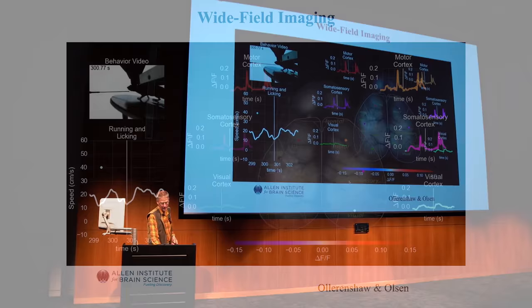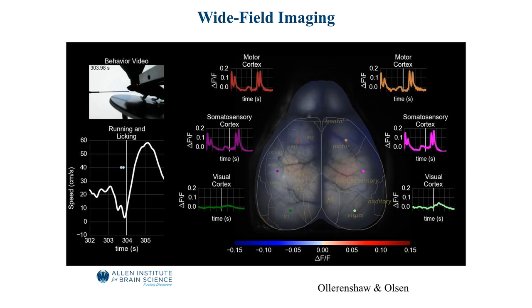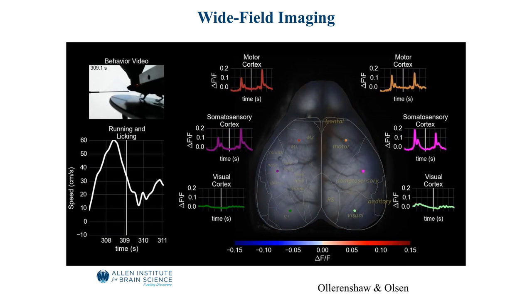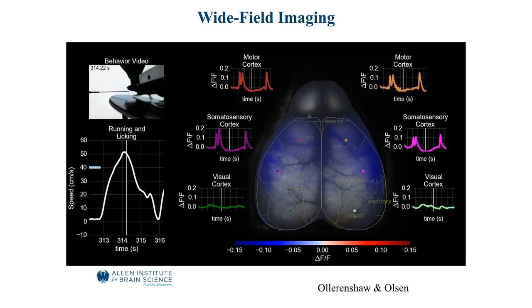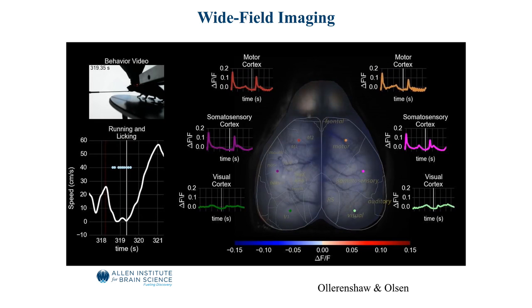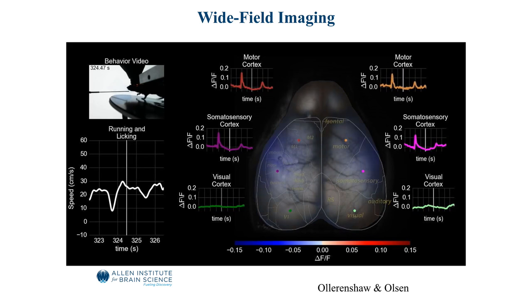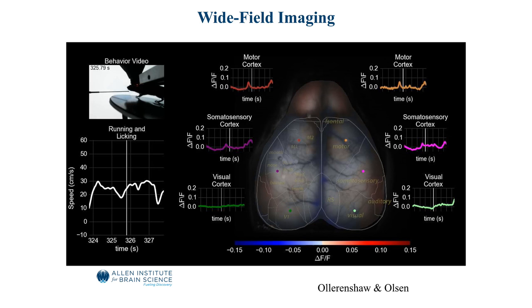At the same time, scientists here at the Allen Institute developed so-called wide-field imaging. This is Doug Oleshaw and Sean Olsen doing this in an Emx pan-excitatory line throughout cortex. As the mouse is running and occasionally gets a stimulus and licks, you can see the activity pattern throughout the entire brain and in specific areas. So you can see how, under different conditions — when you flash a stimulus or do masking — you can inspect the entire brain. Critically, this is a single trial, unlike fMRI which is averaged over multiple trials.